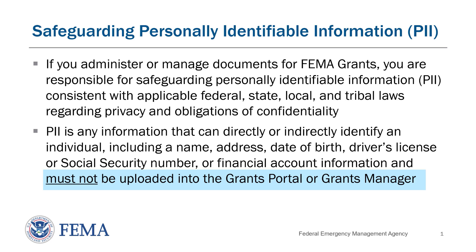Please be aware that if you are working with any documents used for a FEMA grant, you are responsible for safeguarding Personally Identifiable Information, or PII. PII refers to anything that can be used to directly or indirectly identify an individual. Some examples of sensitive PII are addresses, social security numbers, and financial account information. This type of information must not be uploaded into Grants Portal or Grants Manager.